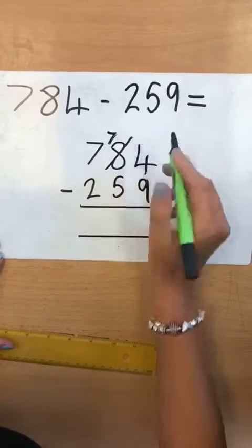They need to start by setting the numbers out in a column, making sure that the digits are all lined up.